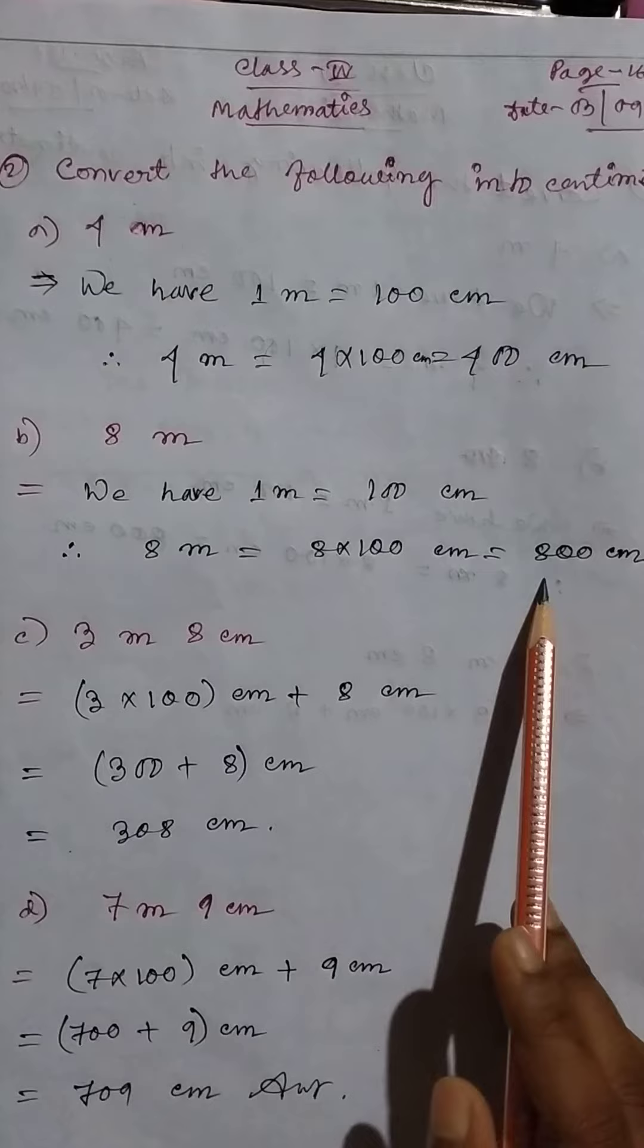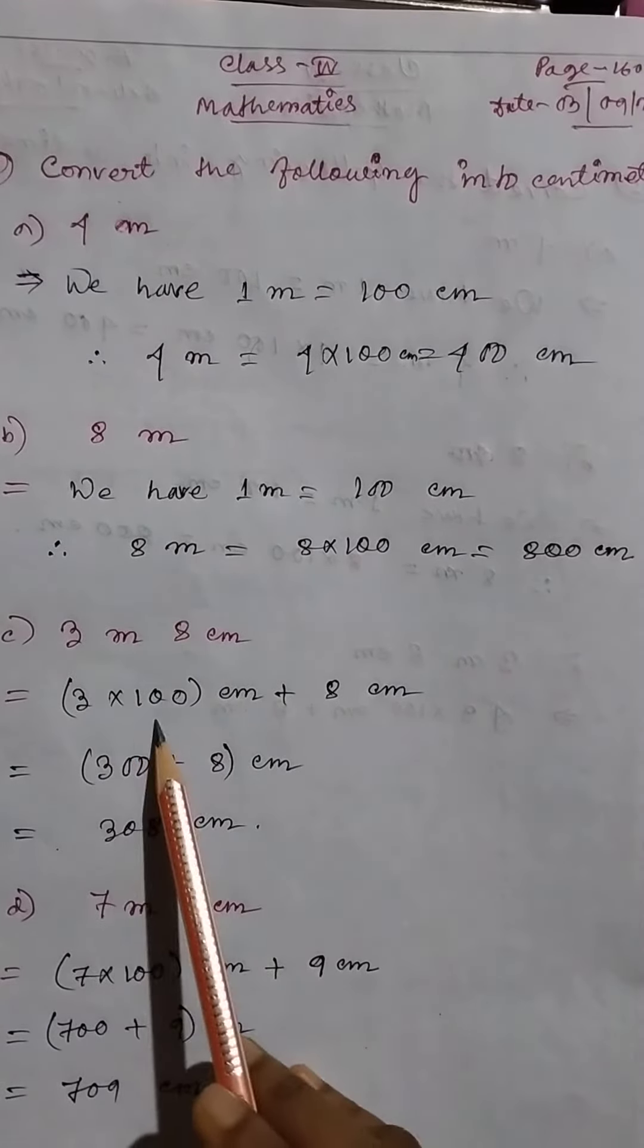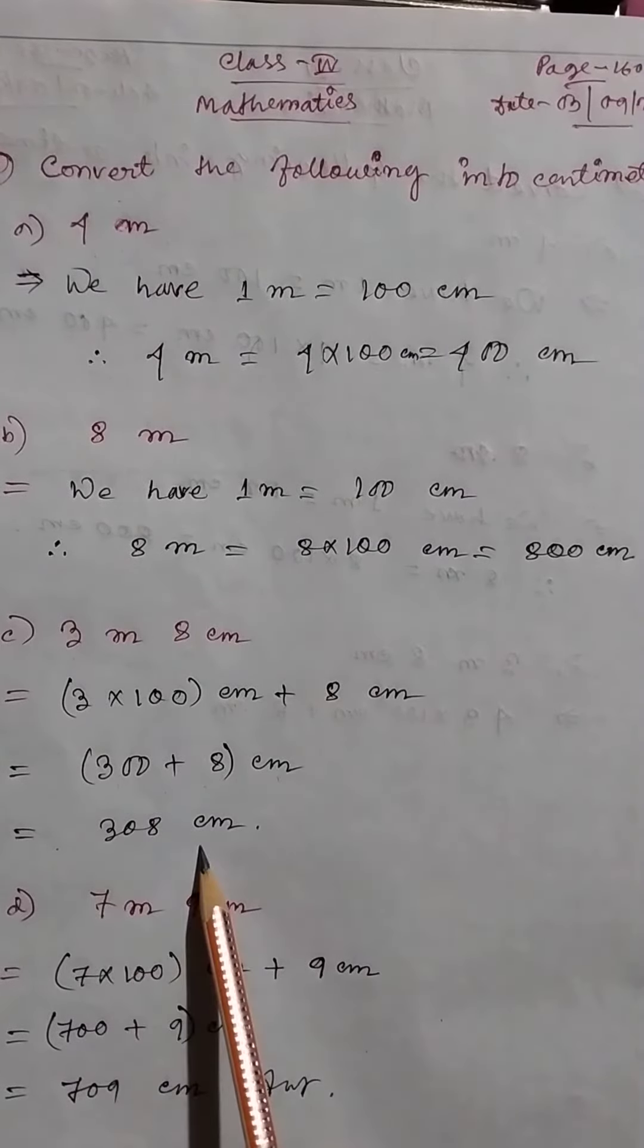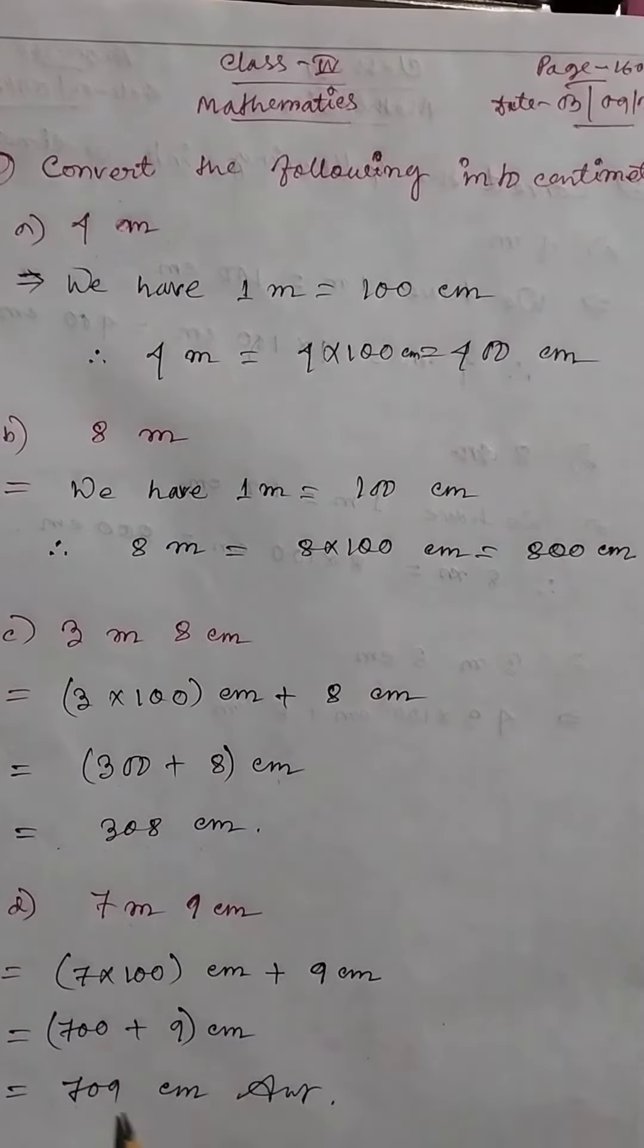Same way, 8 meters equal to 800 centimeters. Then 3 meters 8 centimeters: 3 times 100 centimeters plus 8 centimeters. So 300 plus 8 centimeters equals 308 centimeters. Same for 7 meters 9 centimeters, equal to 709 centimeters.